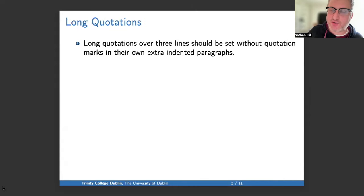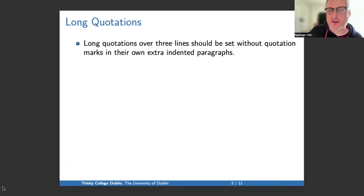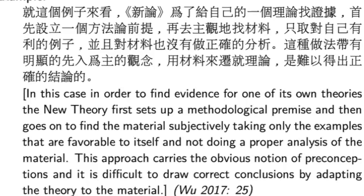What if you're citing a longer passage from Chinese — over what would be three lines in the printed text? This you do without quotation marks in indented paragraphs. Here's an example: we have the Chinese, then the English in square brackets, but there are no quotation marks, and then the citation. The citation comes after the final punctuation mark. So in short passages the final punctuation mark goes after the citation, and in block quotes the citation comes after the final punctuation mark.